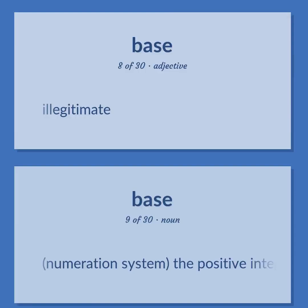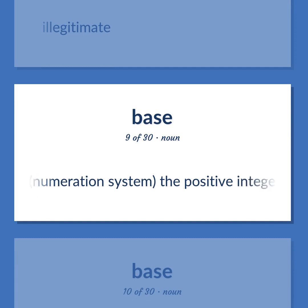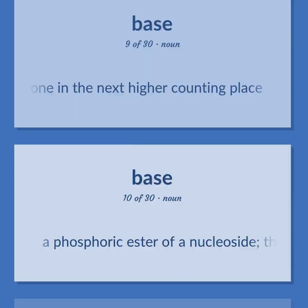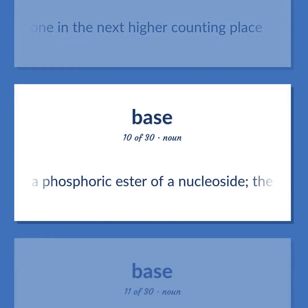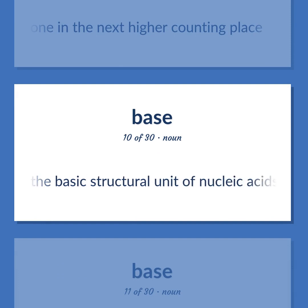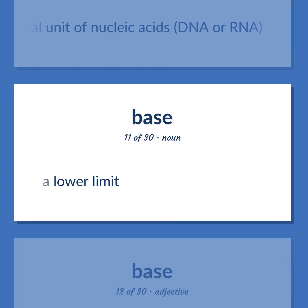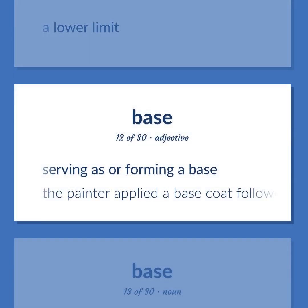Illegitimate. Numeration system: the positive integer that is equivalent to one in the next higher counting place. A phosphoric ester of a nucleoside — the basic structural unit of nucleic acids (DNA or RNA). A lower limit. Serving as or forming a base.